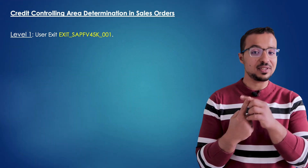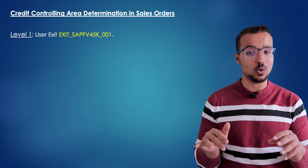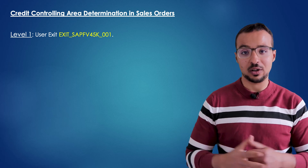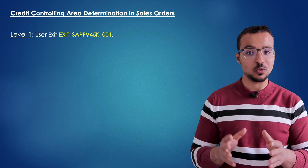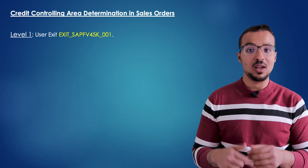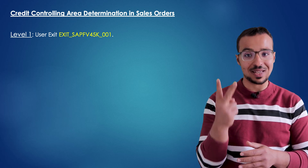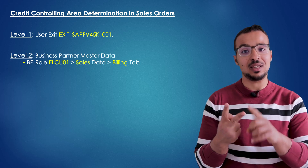When we create a sales order, SAP checks four levels to find the credit controlling area. The first level is a user exit, which allows us to write the code we want to determine the credit controlling area based on our own criteria. I will leave the name of the user exit in the description of the video. If the user exit is not activated, then SAP will move to the second level.